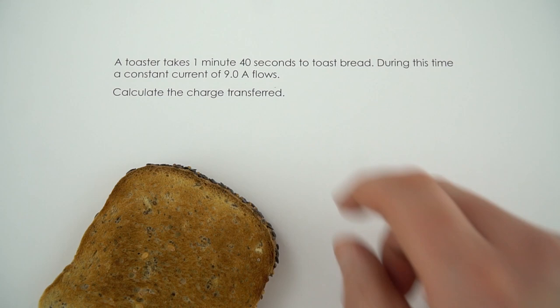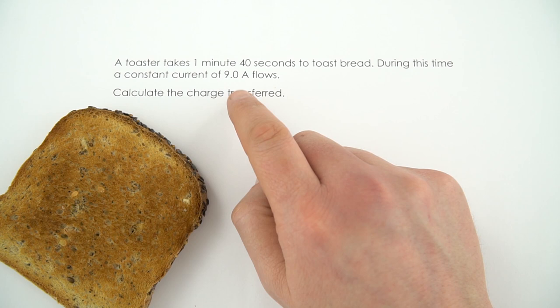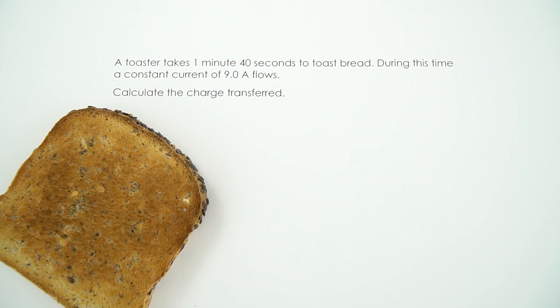So a toaster takes 1 minute 40 seconds to toast bread, just like this. Now during this time it says a constant current of 9.0 amps flows and therefore we need to calculate the charge transferred.